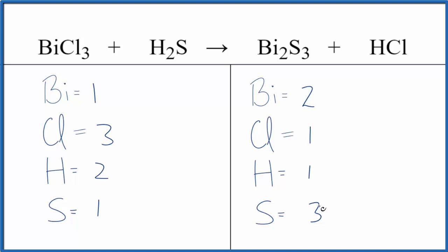It looks like we could try to balance the bismuth first by putting a two here. One times two, that would give us two bismuth. Two goes to everything here, so three times two would give us six chlorine.